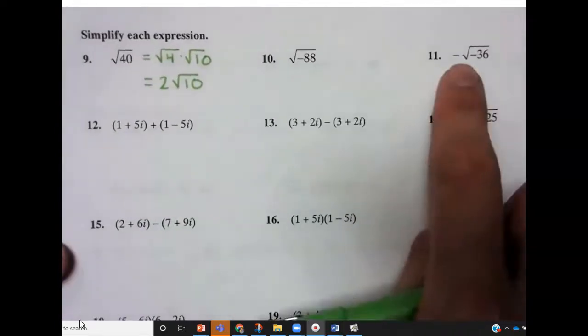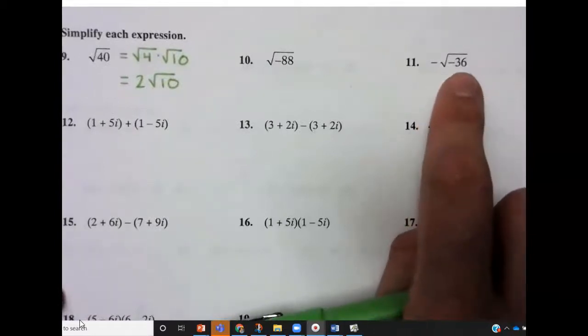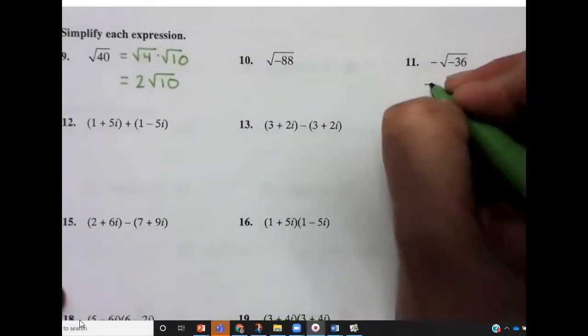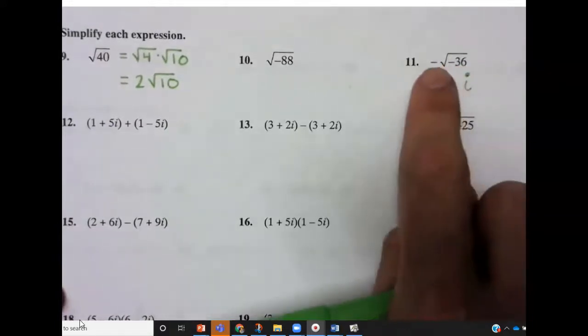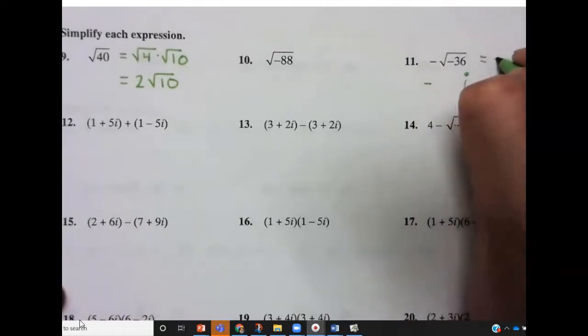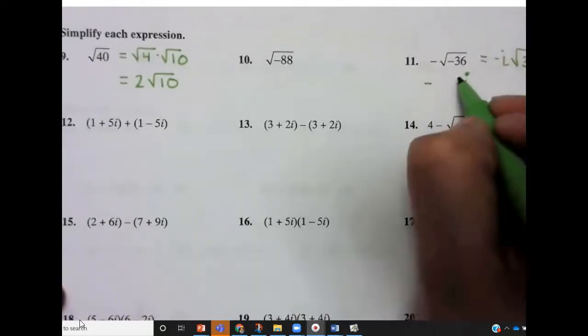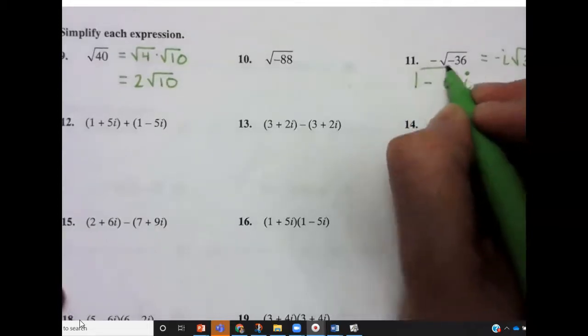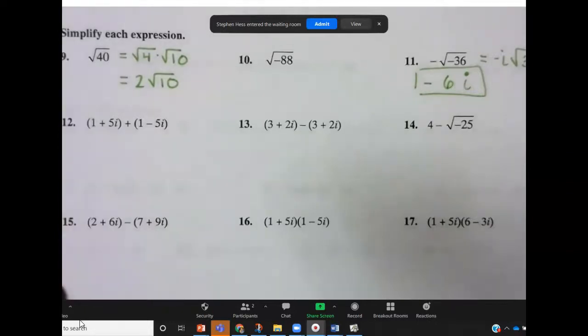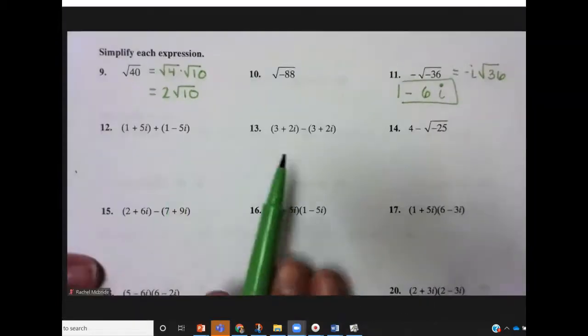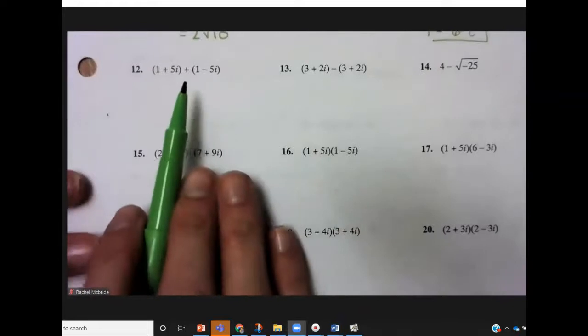A negative, a negative like an 11 doesn't change or cancel those negatives. The outside negative stays, the inside negative becomes an i and the square root of 36 becomes 6. So we get negative 6i.